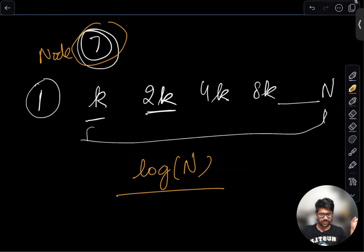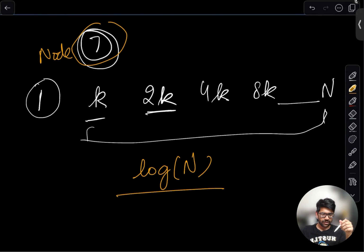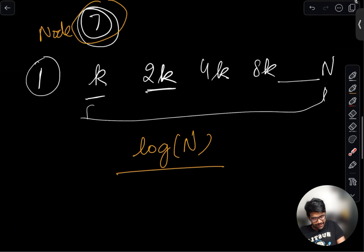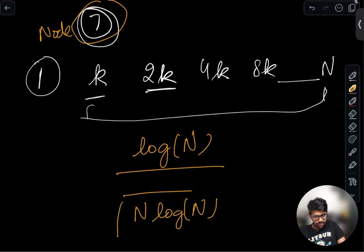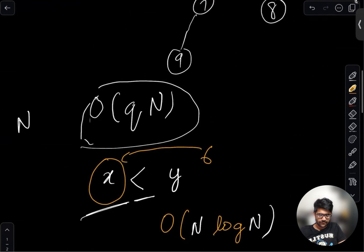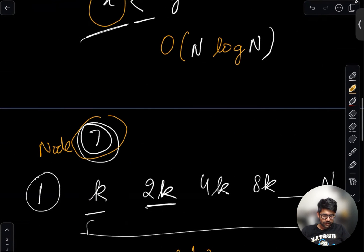So for one particular node, node seven, we proved it will only appear in at most log N DFS traversals. There is nothing special about this node — without loss of generality we could choose node 8, 9, 10, 1, 2, any node and make the same argument. So every node appears in at most log N DFS traversals, and in total across all queries we iterate O(N log N) nodes.